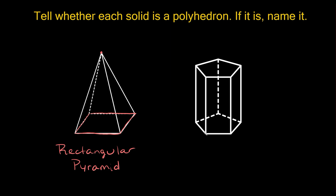Now let's check this one. Is this a polyhedron? It looks like it is, because we don't see any curved lines or faces — everything is just made up of solid straight lines. So this is a polyhedron. To name it, again you want to start with the shape of the base. What shape is the base right here? That looks like a pentagon. So this is going to be called a pentagonal — and is this a pyramid or a prism? This shape actually has two faces that are exactly the same: we have this pentagon down here and also this pentagon up here. So we have two congruent faces, one at the bottom and one at the top. When you have two congruent faces like that, this is called a prism.